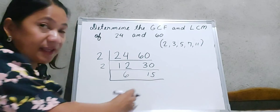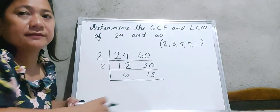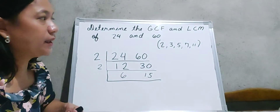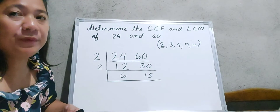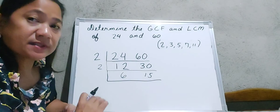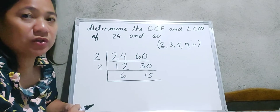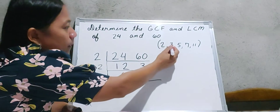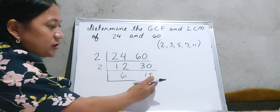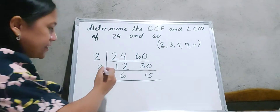We will not stop yet because 6 and 15 are still composite numbers. Let us find the prime number divisible by both 6 and 15. Is 2 divisible by 6? Yes. But is it divisible by 15? No. So let us move on to 3. Since 3 is divisible by both 6 and 15, we will use 3 as our divisor.